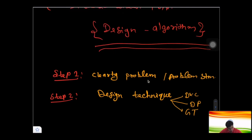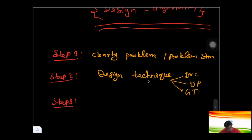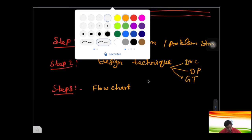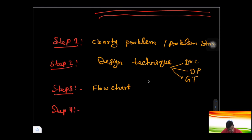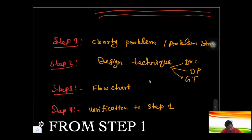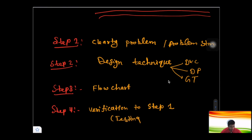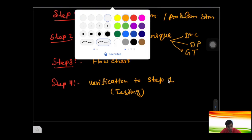Step 3 is the flowchart — a visual representation of how your algorithm works. I'll explain flowcharts in a future video, so please comment if you'd like a separate video on that. Step 4 is verification: you verify all things from Step 1 to Step 3, testing whether everything is correct.